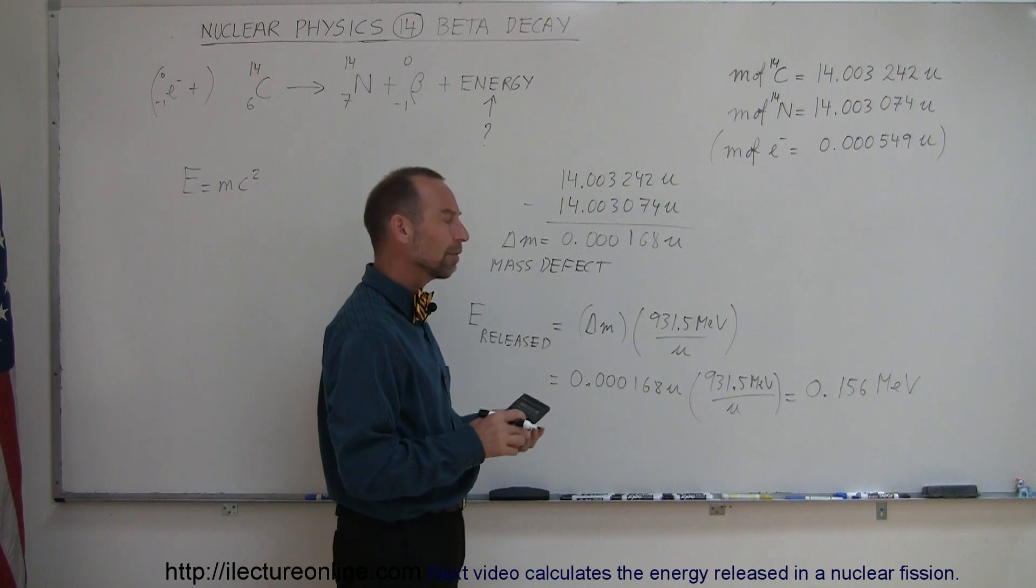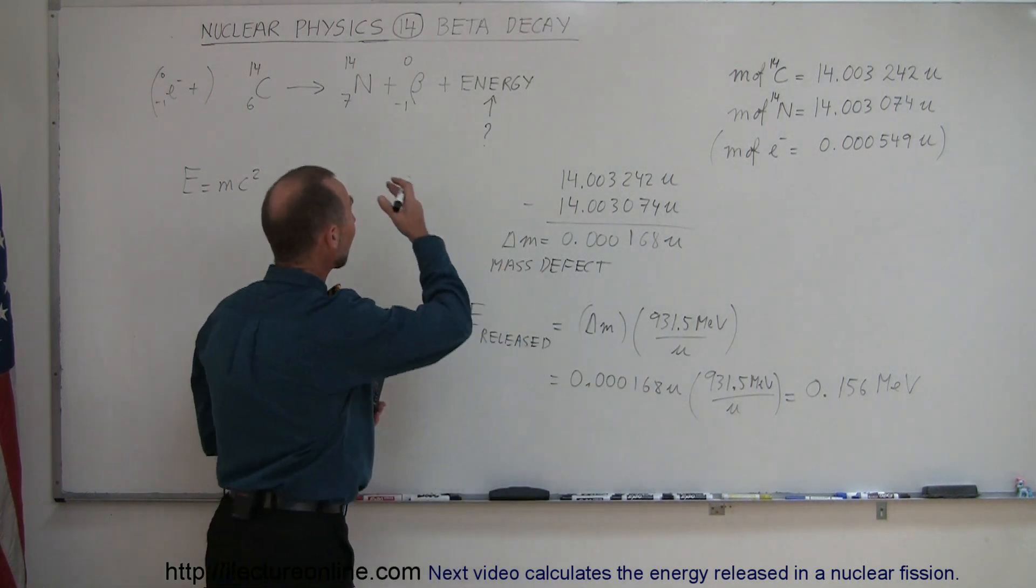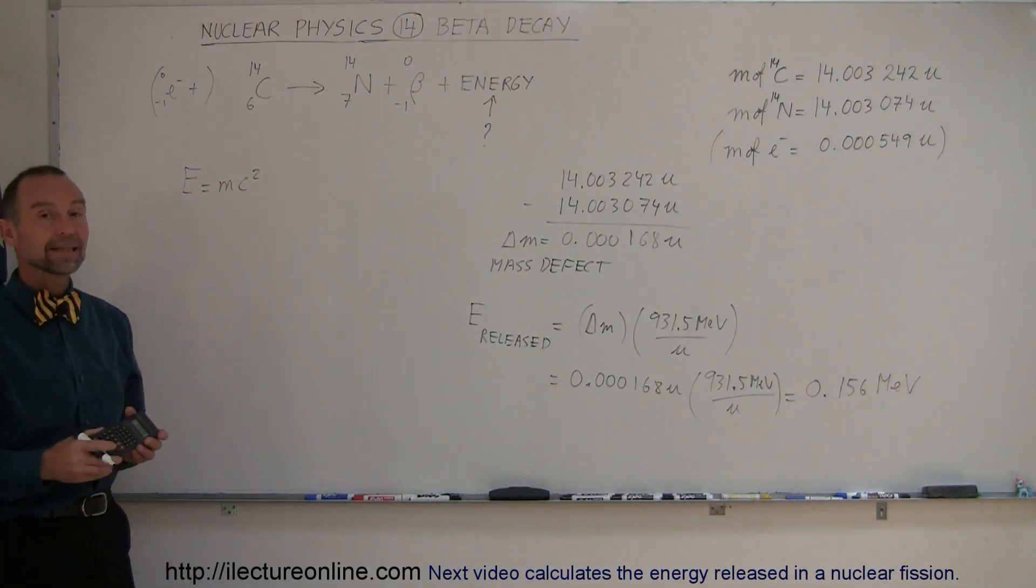So that's about the mass equivalent of a third of an electron. That's quite a bit of energy being released by ejecting this beta particle in this reaction. And that's how you look at beta decay.